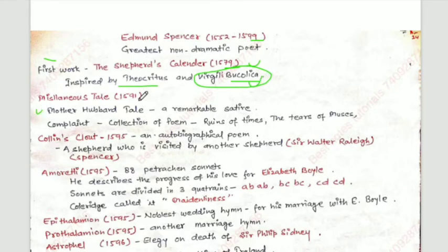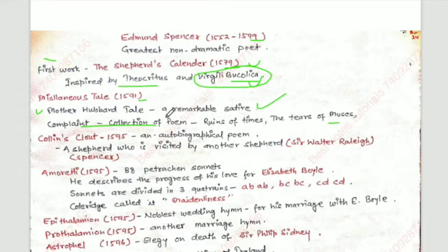Complaints, published in 1591, includes Mother Hubberd's Tale, a remarkable satire. It also includes a collection of poems such as Ruins of Time and The Tears of the Muses — these are some important poems from that collection. Colin Clout, published in 1595, is an autobiographical poem.